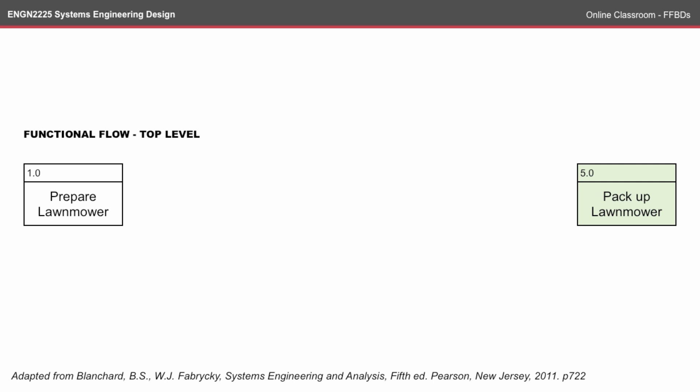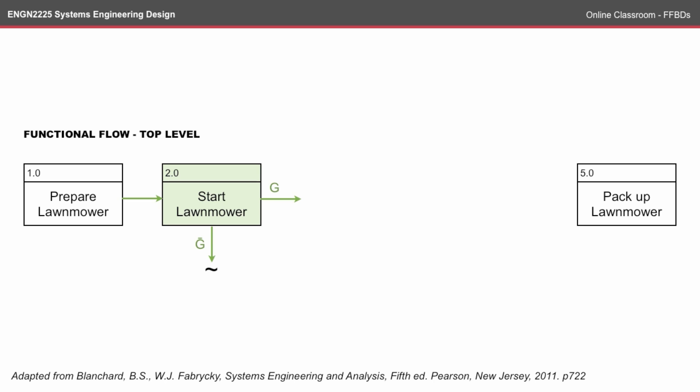The first thing the user might do is try to start the lawnmower, and here we have a go/no-go situation. This is because we need a procedure for if the lawnmower doesn't start. The no-go — indicated by the G with a line above it — will lead to a maintenance flow block diagram, which we'll get to shortly. The next step, if the user is able to start the lawnmower, is to mow the lawn.